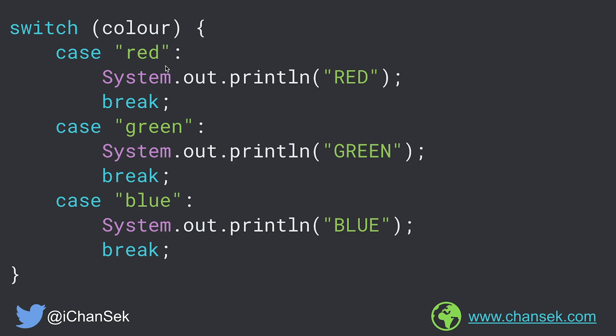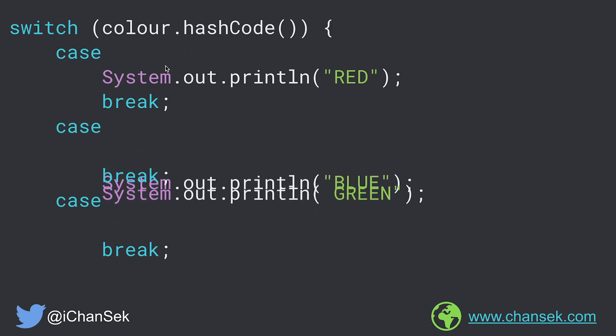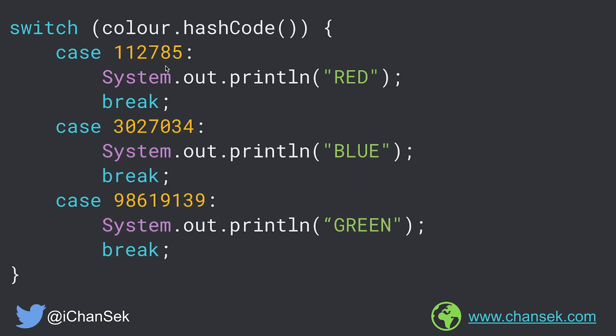Internally, the compiler converts this switch with strings to a switch with integers, as integers are supported even before JDK7. The switch parameter, which is color here, is being converted into color.hashCode(), and similarly all the cases like red, green, and blue are being converted into red.hashCode(), green.hashCode(), and blue.hashCode(). Since the cases are string literals, their hash codes are generated at compile time and replaced accordingly. So the switch statement with string in the source code is converted by the compiler into a switch statement with integers.